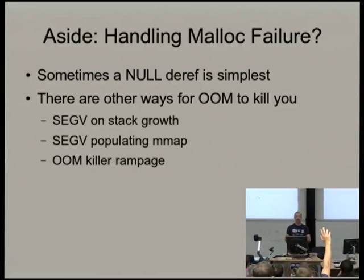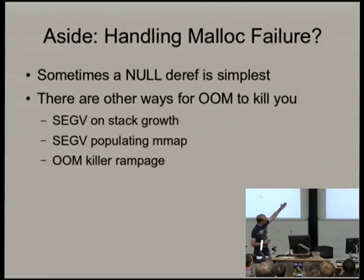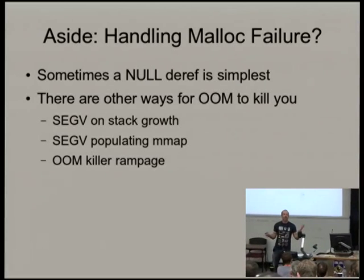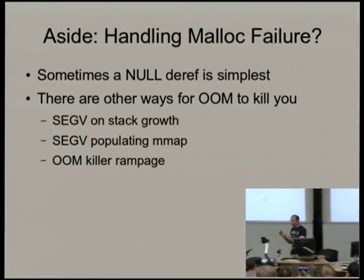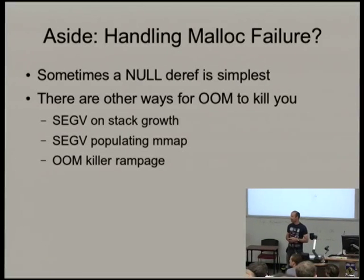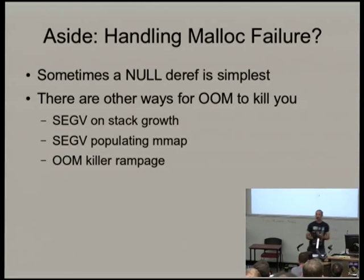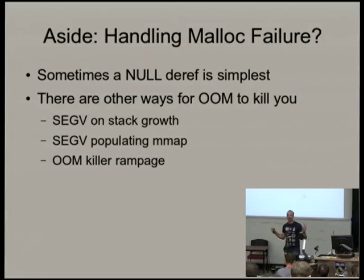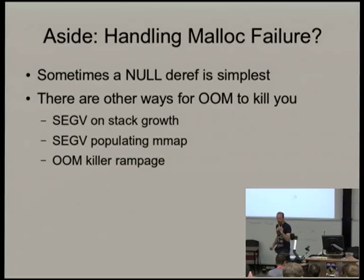There are other ways for out-of-memory to kill you. You can get a segfault on stack growth; you can segfault on populating an mmap, which includes memory over-commit. You can turn off memory over-commit so that malloc only returns when you've got real memory — most people don't, of course. And if you're a database server using 30 GB of 32 GB of memory, you can no longer fork.